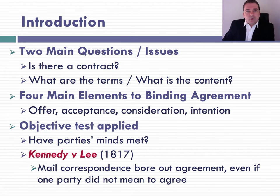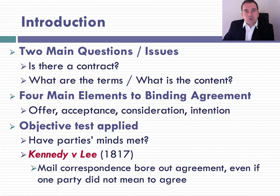Before we get into the details of what an offer is and what the applicable rules are, let's take a brief look at contracts in general. In this course we are essentially looking at two separate questions. The first part looks at whether there is a contract, and then we move to the second main question: what are the terms of the contract? There are essentially four elements: offer, acceptance, consideration, and intention to create legal relations. Today we're going to look at the first of these — offer.